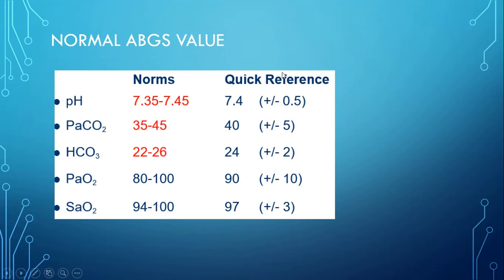The normal ABG values are shown in this picture. The pH ranges from 7.35 to 7.45. Carbon dioxide partial pressure ranges between 35 to 45 mmHg. Bicarbonate ranges between 22 to 26 mmHg. Partial pressure of oxygen is 80 to 100, while oxygen saturation should be between 94 to 100.